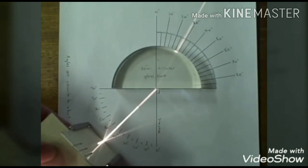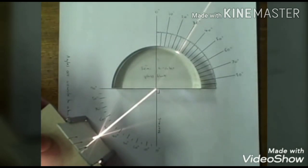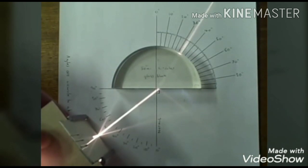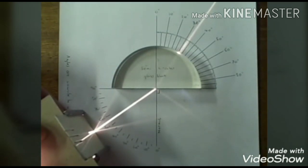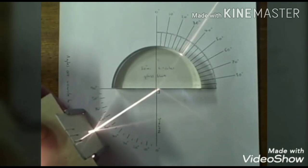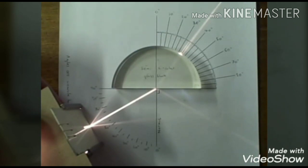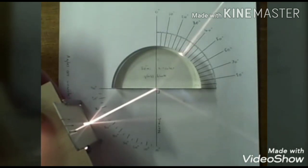This is the experimental proof that when a light ray travels from rare medium to denser medium, it bends towards the normal. Now the angle of incidence is 60 degrees, and the angle of refraction is approximately 35 degrees. In this manner, you have to record a number of i values and their corresponding r values in the table.